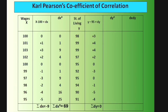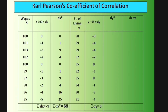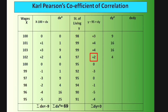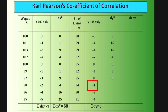Now computing dy²: 3²=9, 4²=16, 4²=16, 2²=4, 0²=0, (−3)²=9, (−3)²=9, 0²=0, (−1)²=1, (−5)²=25, (−4)²=16. Summing these values gives Σdy² = 96. Wait - note the dy values are 3,4,4,2,0,−3,0,−1,−5,−4, giving Σdy² = 9+16+16+4+0+9+0+1+25+16 = 96.